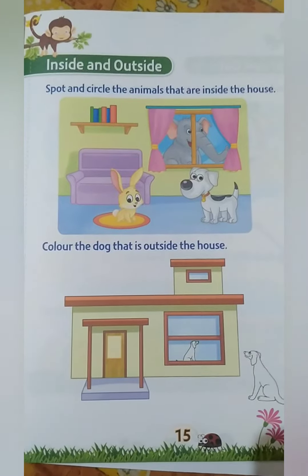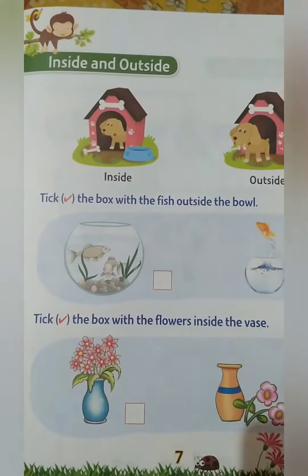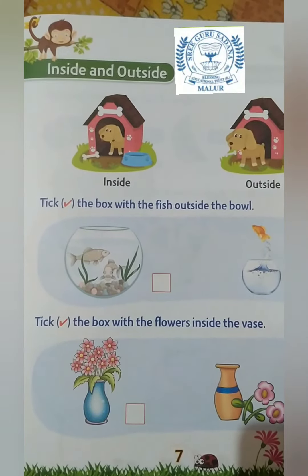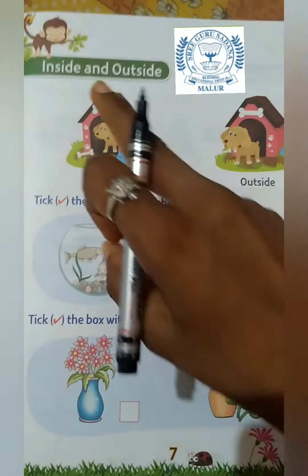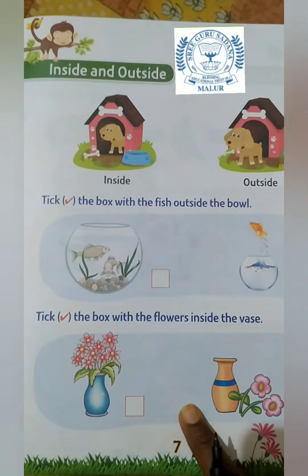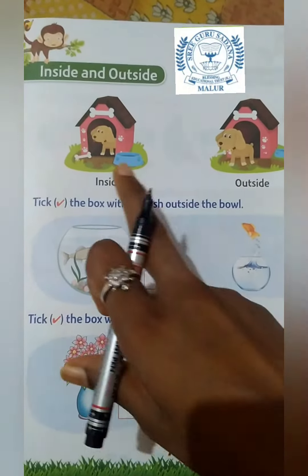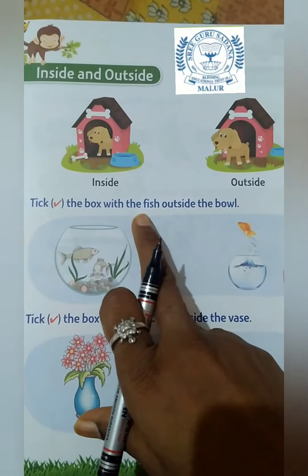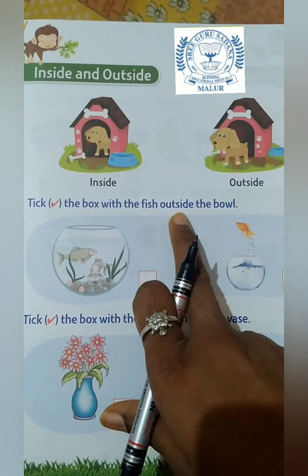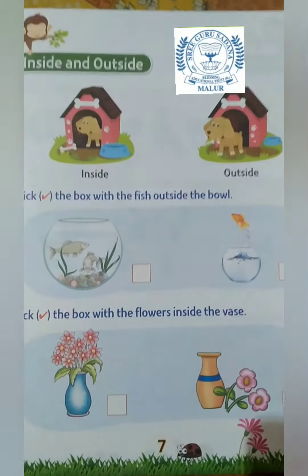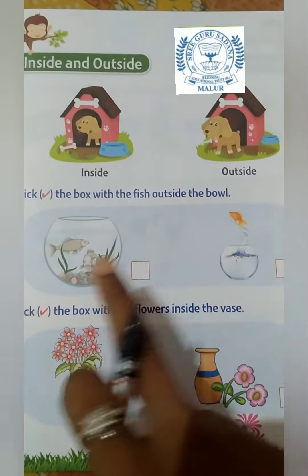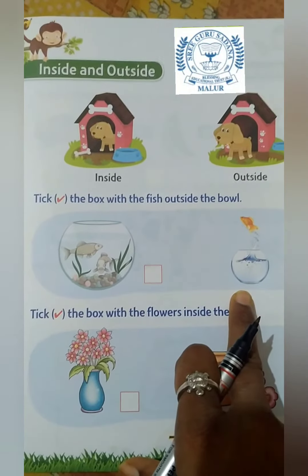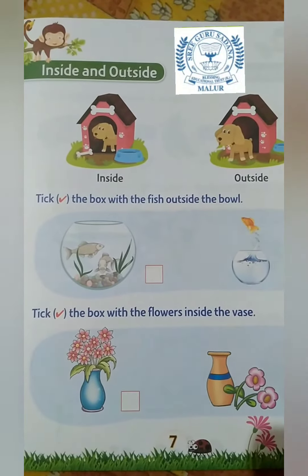This is your homework. Here is one more page for your homework, children. This is also an inside and outside practice page. Tick the box with the fish outside the bowl — here there are two bowls. You have to tick the box with the fish outside the bowl.